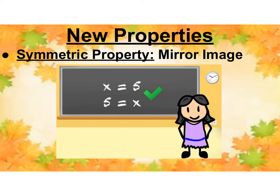The symmetric property is the mirror image. You change the order. X equals 5 is the same thing as saying 5 equals X. So whenever you change the order, you're going to call that symmetry property.